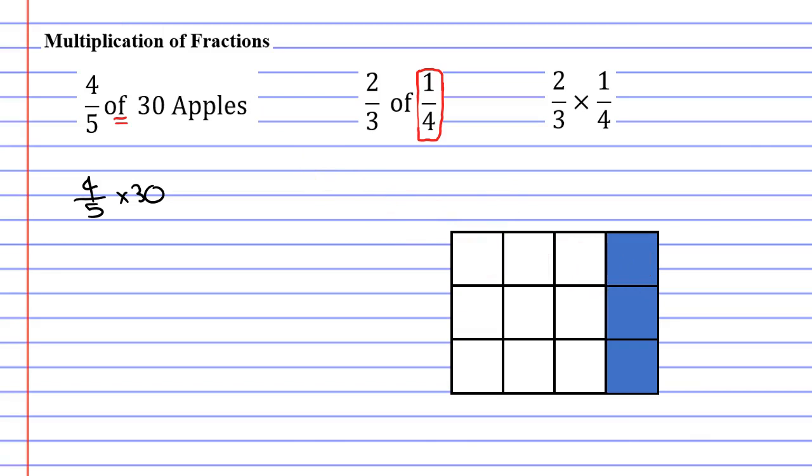So why does this diagram represent one-quarter? Well, if you look at each column, there are four of them, four columns. Therefore, each column must represent only one-quarter. And since we've only colored in one of those columns, we have colored in a quarter of the whole shape.